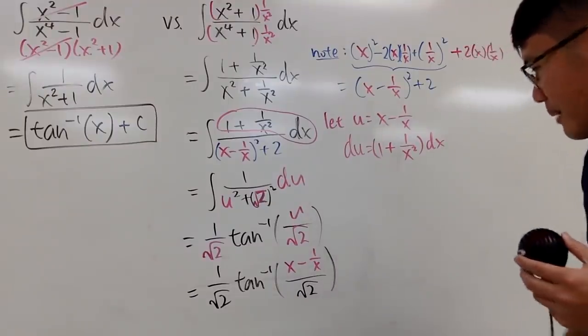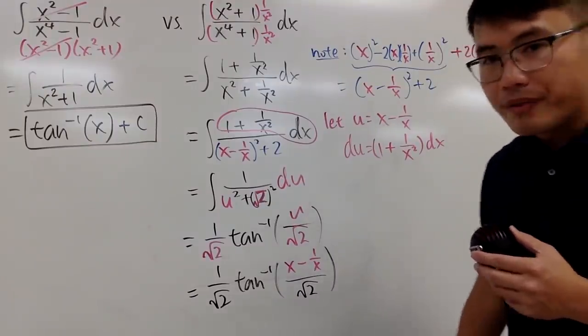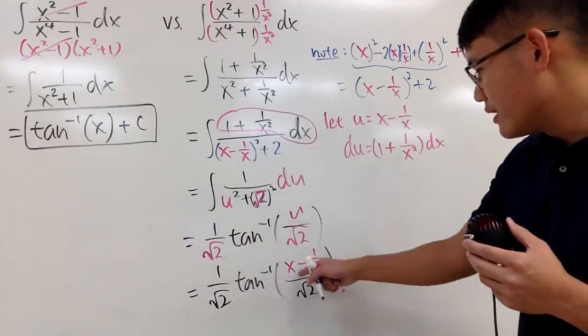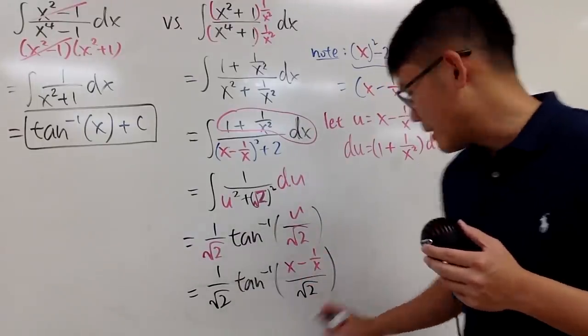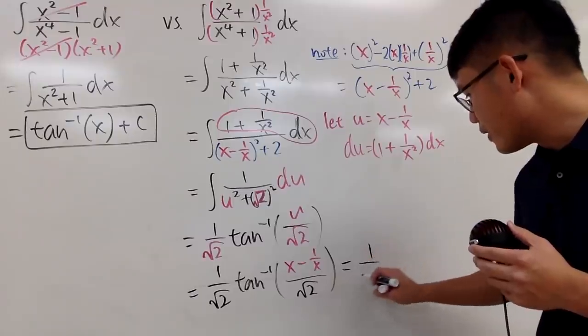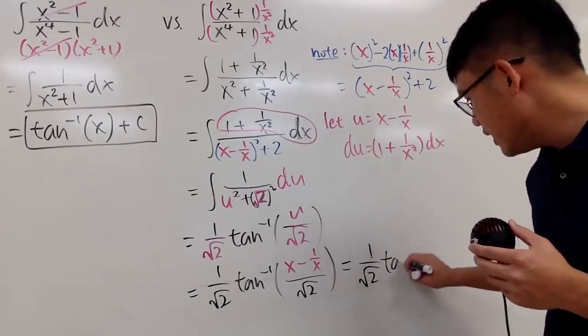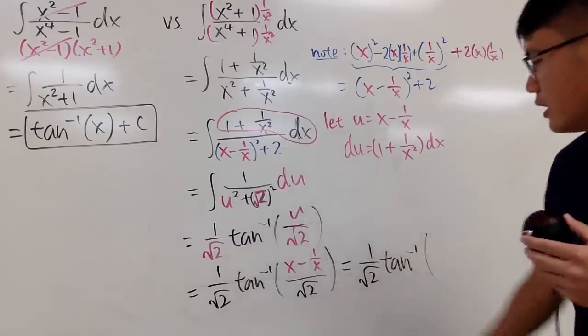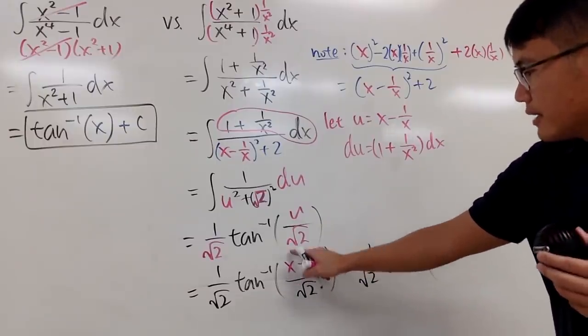If you really want, you can get a common denominator. I'll do that for you: 1/√2 times arctan—multiply by x on top and bottom, so I get x² on top, then minus 1.